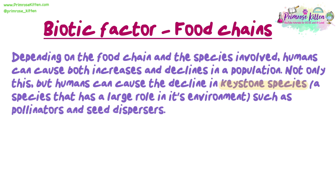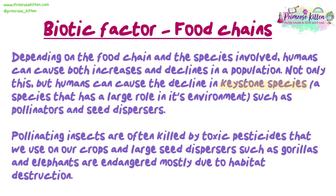Humans can also cause the decline in keystone species — species that have a large role in their environment — such as pollinators and seed dispersers. Pollinating insects are often killed by toxic pesticides used on crops. Large seed dispersers, such as gorillas and elephants, are endangered mostly due to habitat destruction.